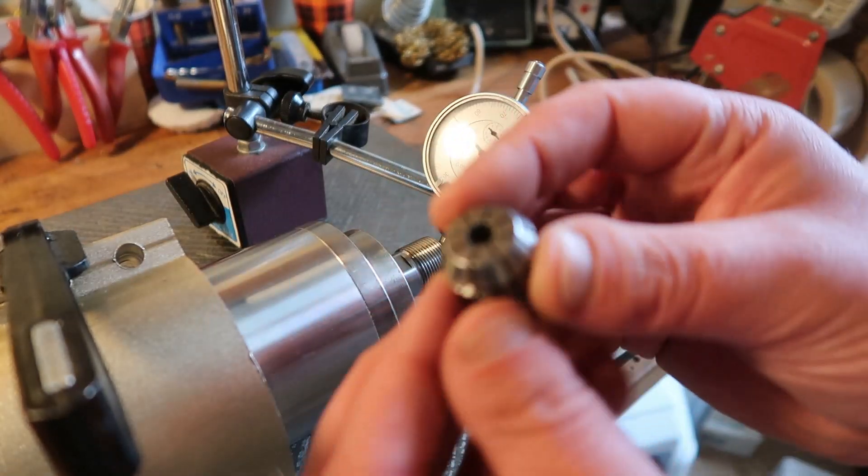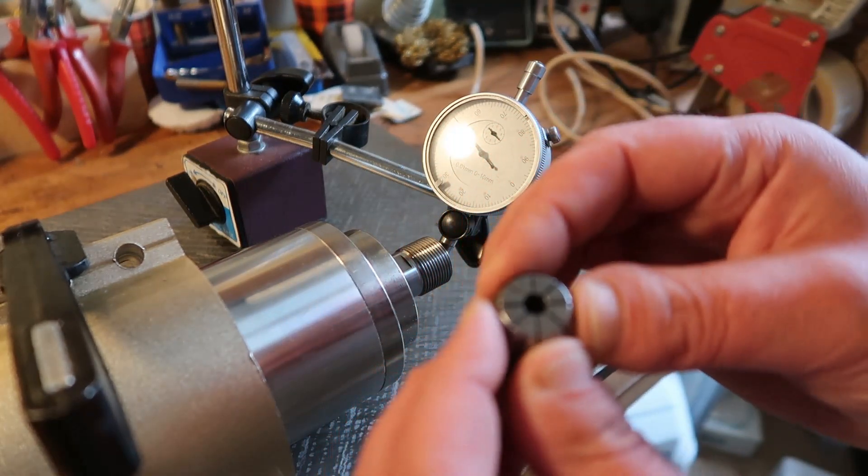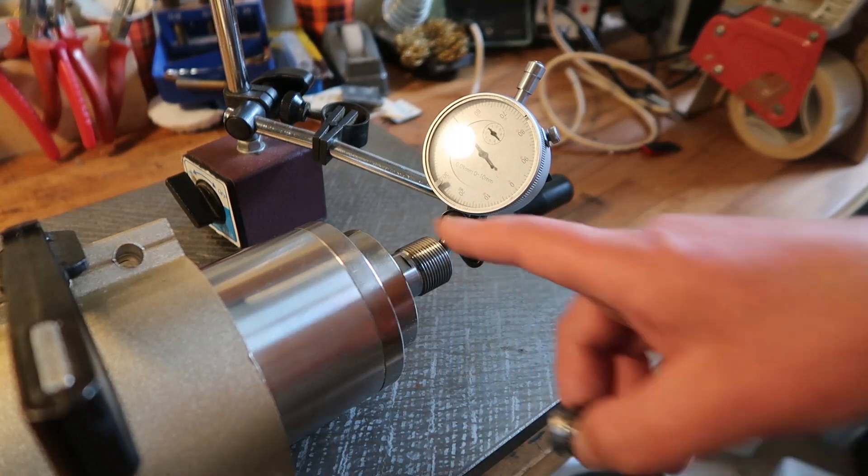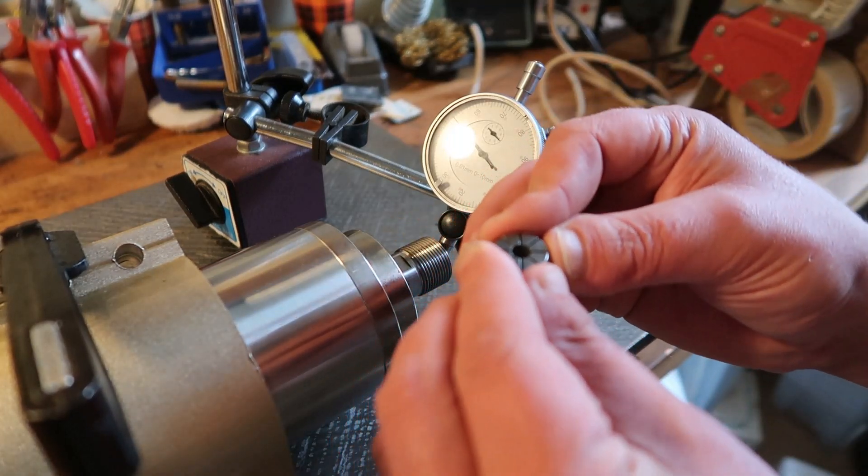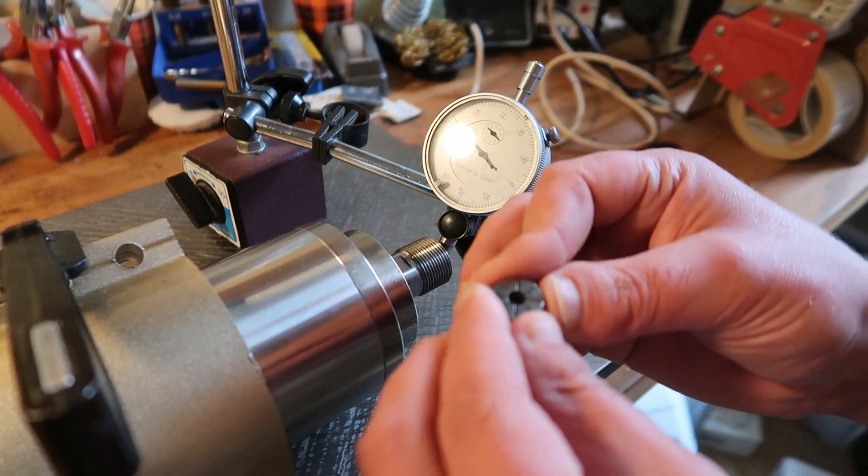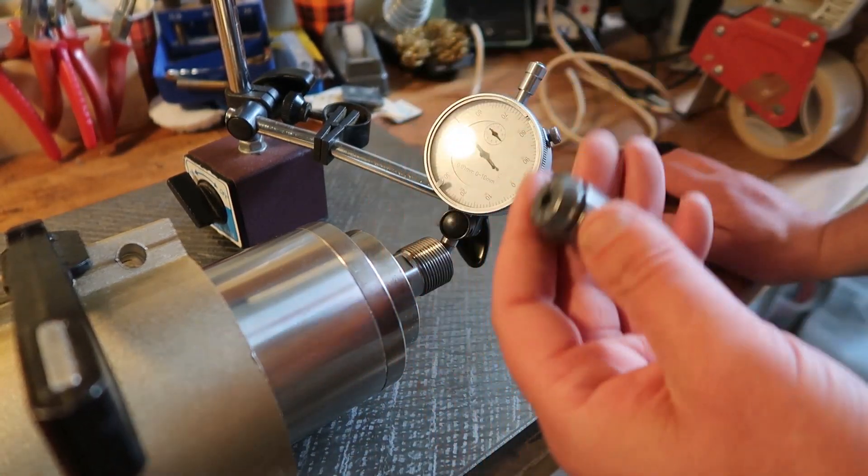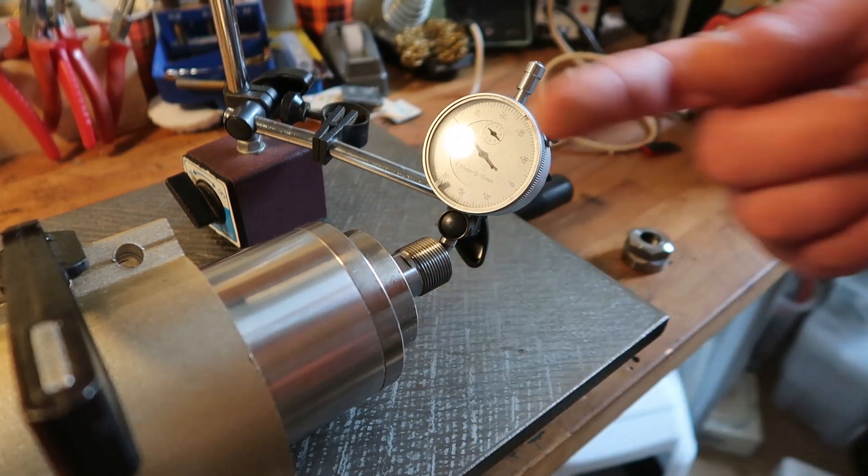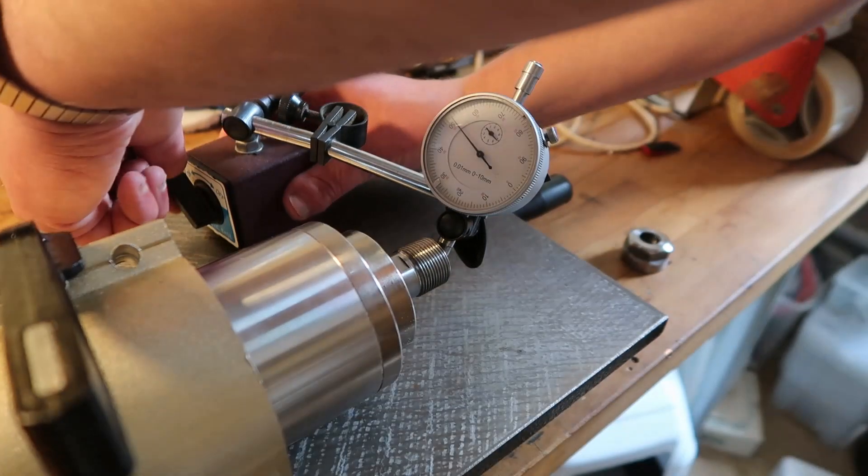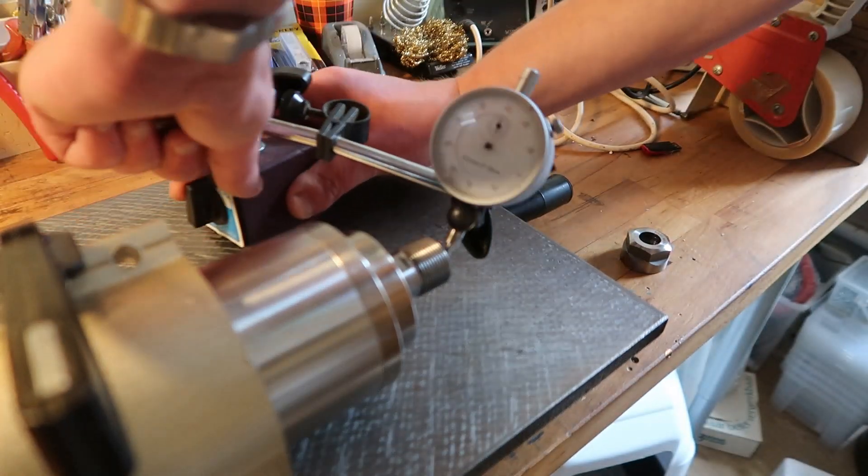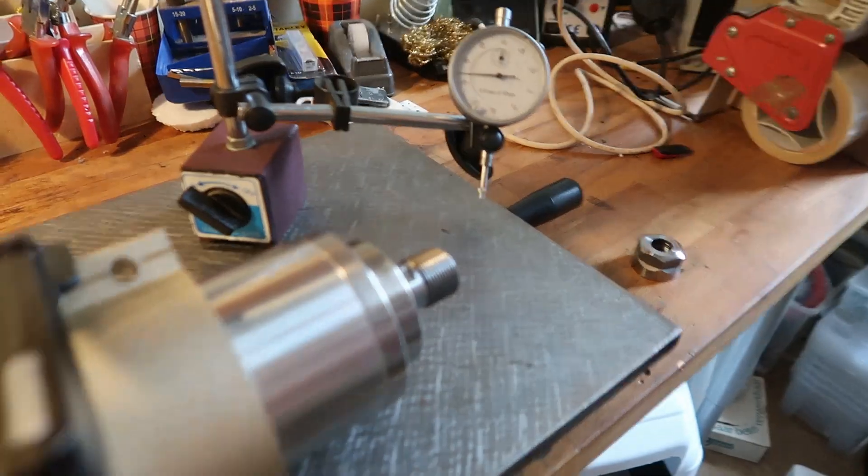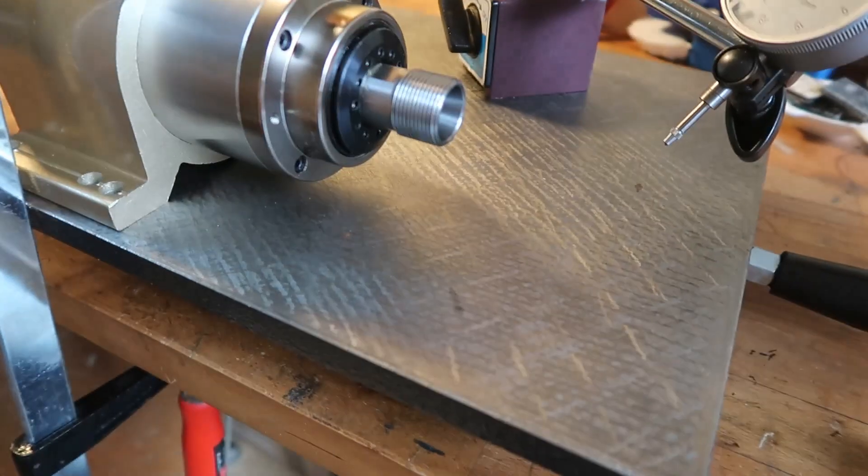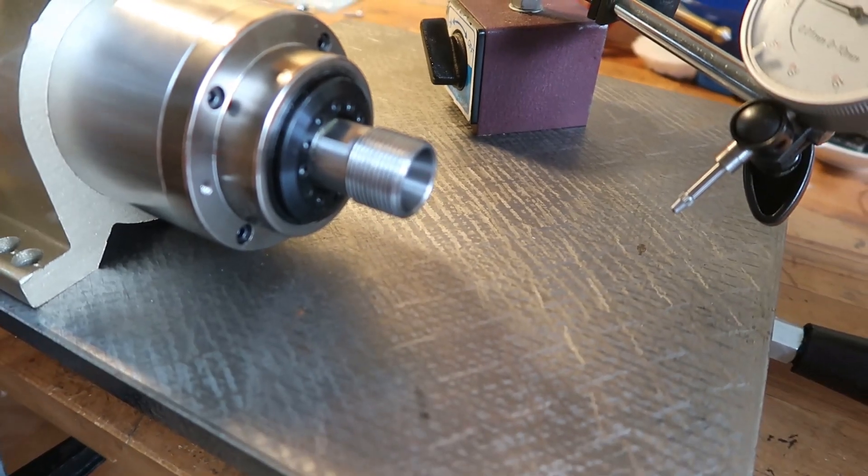This one. Now the nose is like tapered, and this will fit in there. I will squish this together, which will hold the tool. So if this is accurate, it should clamp the cutter all around evenly, and the cutter should be in the middle and have no run-out, so no wobbly.